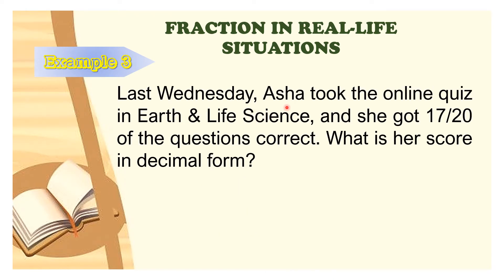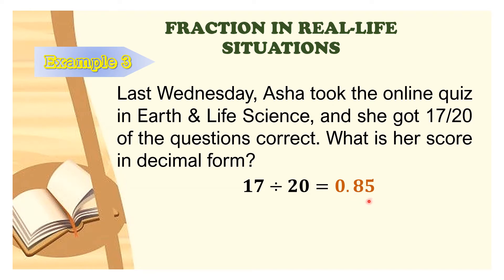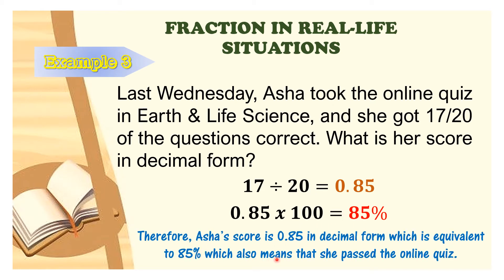Next example. Last Wednesday, Asha took the online quiz in Earth and Life Science and she got 17 over 20 of the questions correct. What is her score in decimal form? The step is to divide the numerator by its denominator: 17 divided by 20 is equal to 0.85. To find Asha's score rate, we convert 0.85 to its percent form by multiplying by 100, giving 85%. Therefore, Asha's score is 0.85 in decimal form, which is equivalent to 85%, meaning she passed the online quiz.